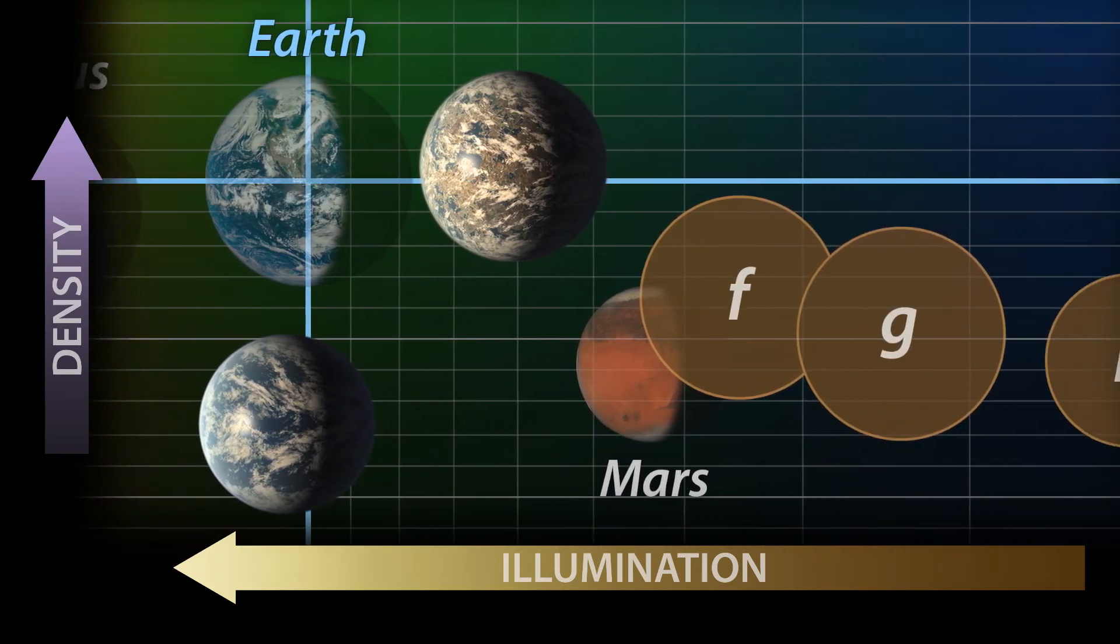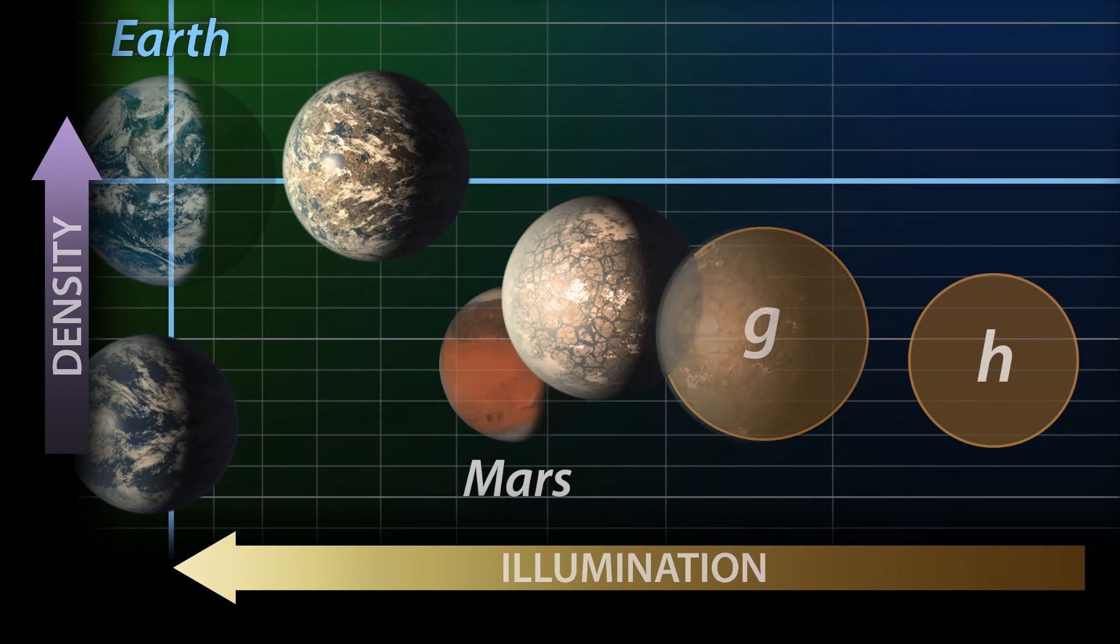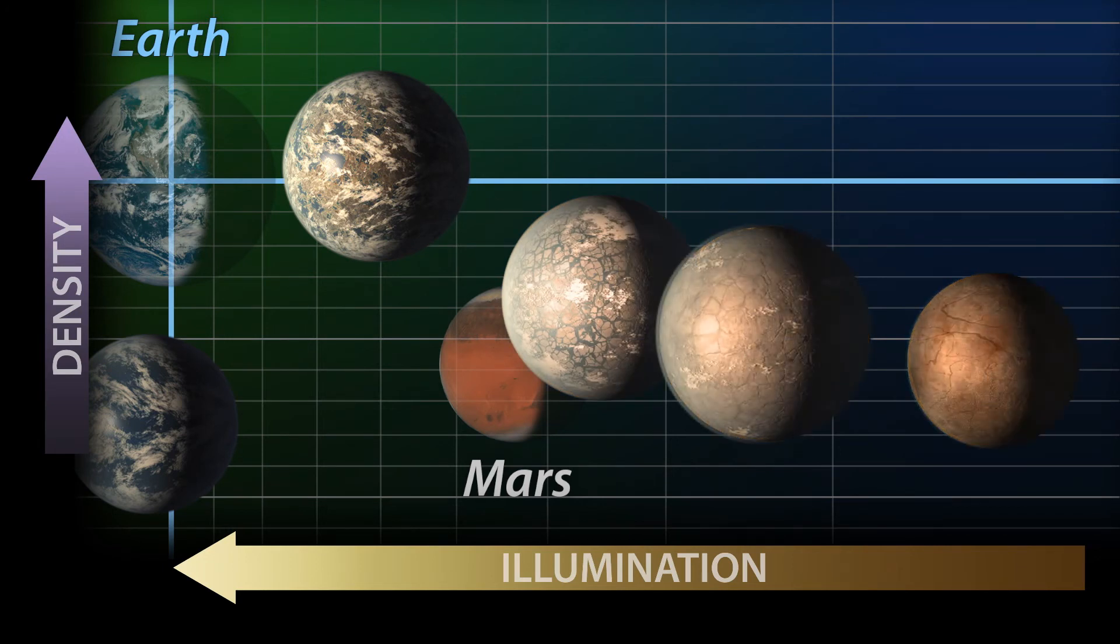The outer planet densities are a little higher, but still low compared to Earth. This could indicate significant amounts of water, probably more in the form of ice as they get colder.